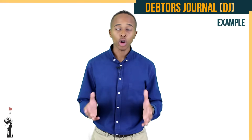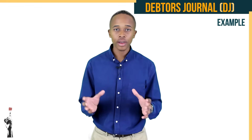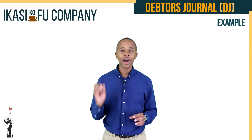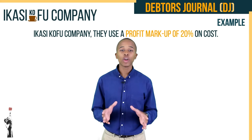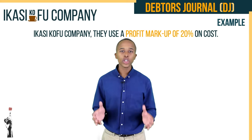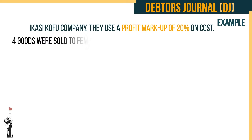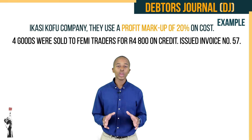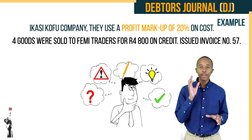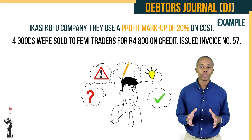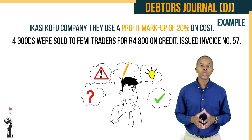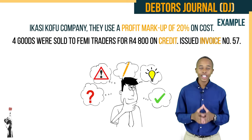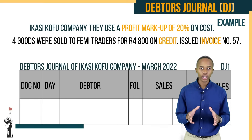Let's look at a practical example to see how this theory comes to life. We will be looking at Ikasikovu Company, which uses a profit markup of 20% on cost. The first example: goods were sold to Femi Traders for R4,800 on credit; invoice number 57 was issued. Before we look at the example, we must stop, evaluate, and look at the key words: 'credit' and 'invoice' identify this as a DJ — a debtor's journal.